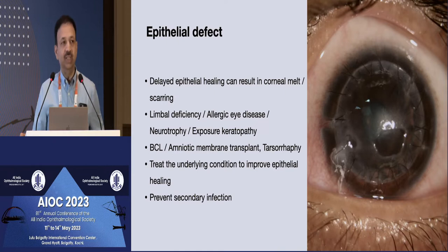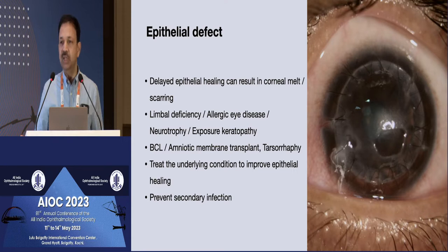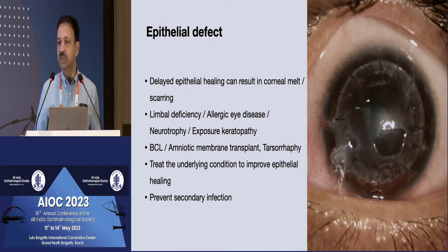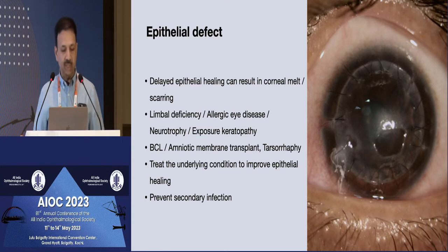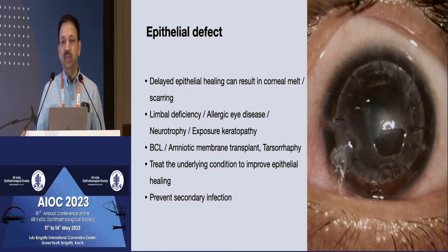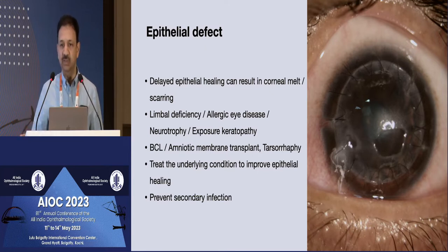Why does this occur? It can occur if there is already a pre-existing limbal stem cell deficiency, especially in eyes with chronic allergic eye disease, or if there is reduced corneal sensation or some element of neurotropy. If there is a scar resulting from herpetic infection and you do a corneal transplant, or if there is a lid malaposition — either an entropion or an ectropion — which prevents resurfacing of the tear film, you can have this kind of problem.